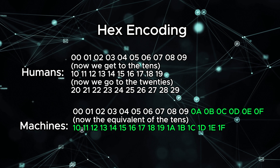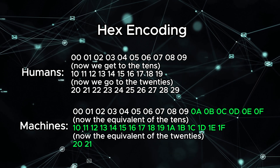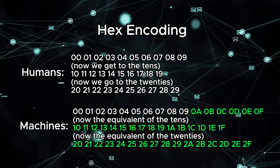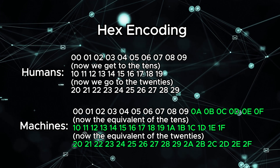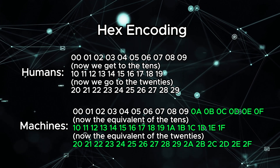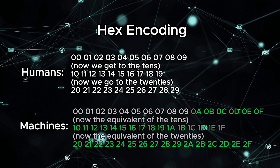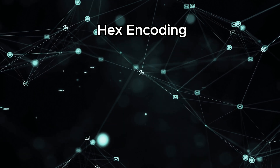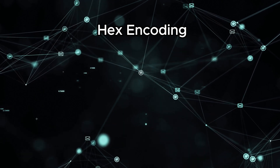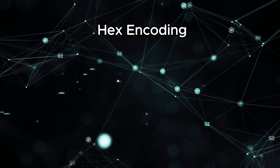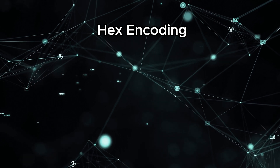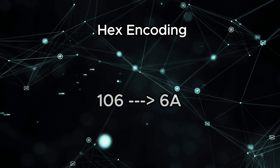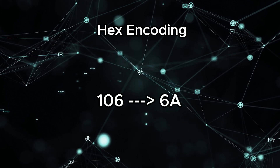In computer counting, it looks like this — it's kind of like their numeric alphabet. When we use hex encoding, we're talking in this computer counting language. It might seem a bit unusual for us, but for computers it's their way of making conversations more efficient. For example, the number 106 in our normal way of counting becomes 6A in hexadecimal.